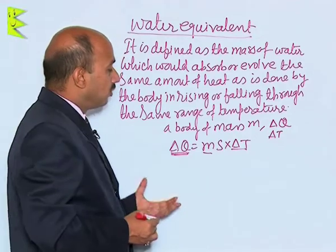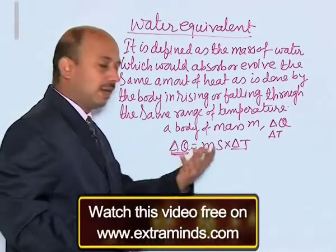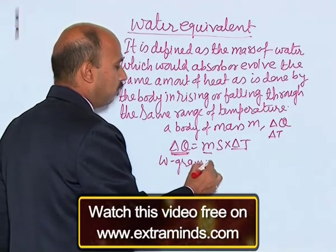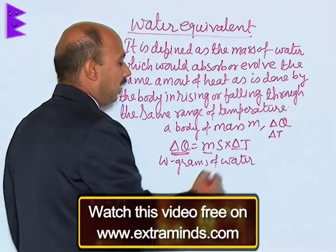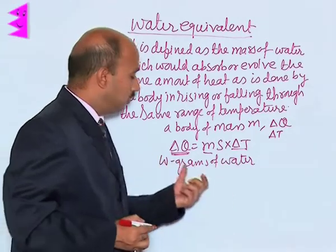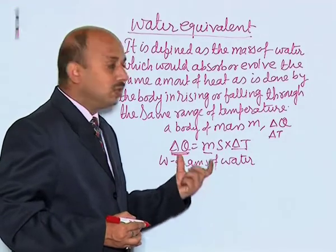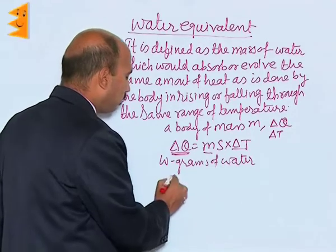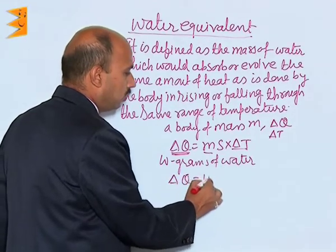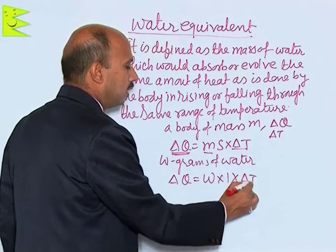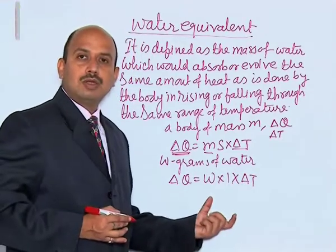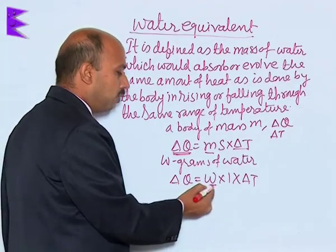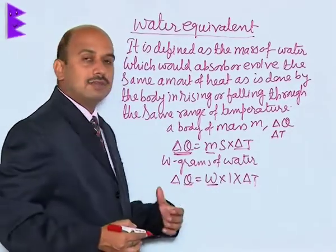Suppose now the same amount of heat is given to W grams of water. I have taken here W grams of water and the same amount of heat is given to this W gram of water, so that the temperature rises by the same amount, that is delta T. Then we can also write delta Q is equal to W into 1 into delta T, because the specific heat of water is 1 calorie per gram degree Celsius. So, the same heat is given to the W gram of water so that the rise in temperature is the same.